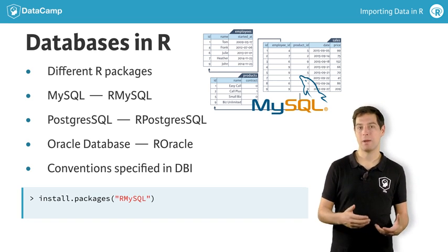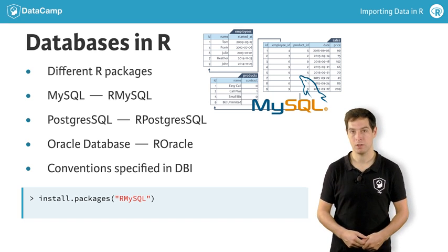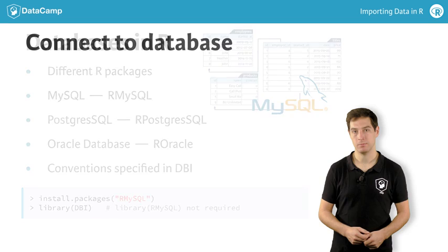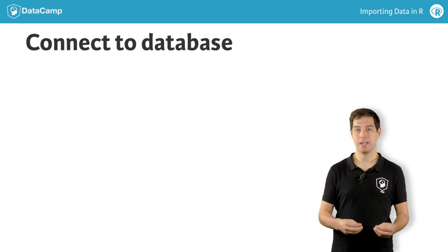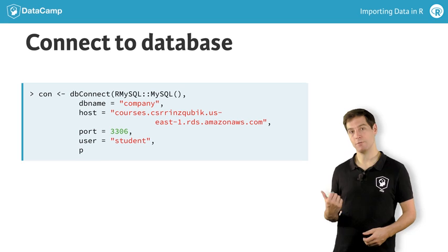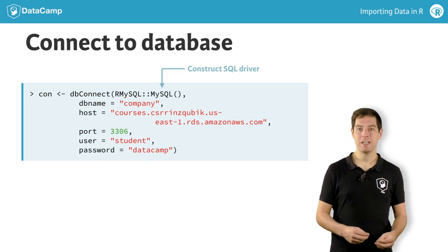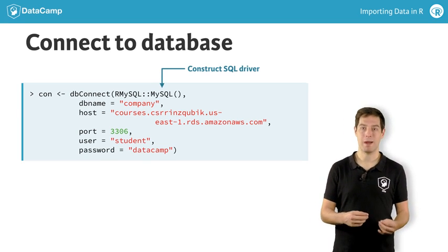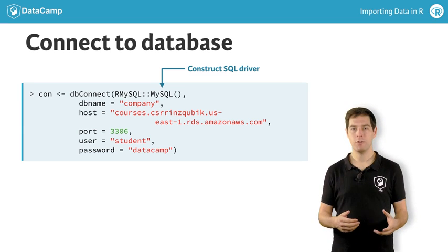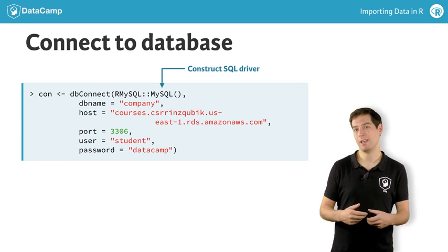Let's install the RMySQL package, which automatically installs the DBI package as well. Loading only the DBI package will be enough to get us started. The first step is creating a connection to the remote MySQL database. You do this with dbConnect, as follows. The first argument specifies the driver that you will use to connect to the MySQL database. The MySQL function from the RMySQL package simply constructs the driver that dbConnect can use.